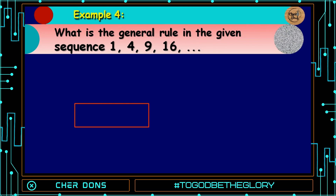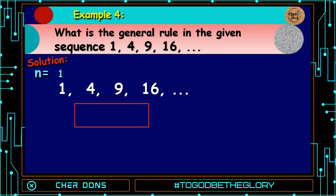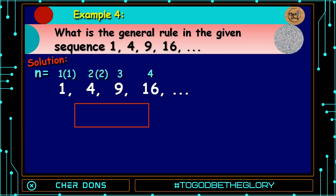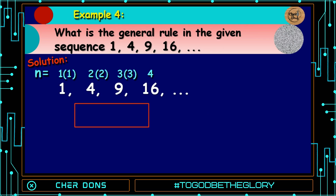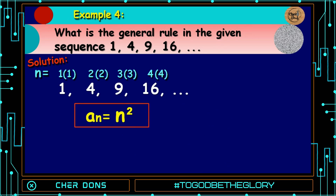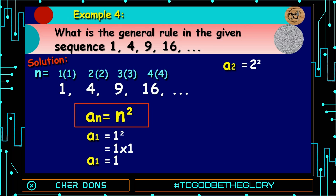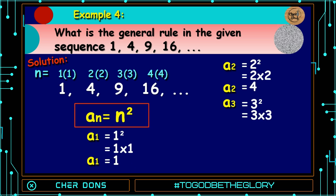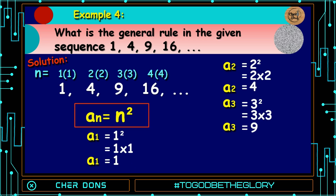Example number 4: What is the general rule in the given sequence 1, 4, 9, 16, and so on? Writing the value of n: 1, 2, 3, 4, and so on. To get the first term, 1 multiplied by 1 gives 1. 2 multiplied by 2 is 4. 3 multiplied by 3 is 9. And 4 multiplied by 4 is 16. Our general rule is A sub n is equal to n squared. Solving: A sub 1 equals 1 squared = 1. A sub 2 equals 2 squared = 4. A sub 3 equals 3 squared = 9. A sub 4 equals 4 squared = 16.